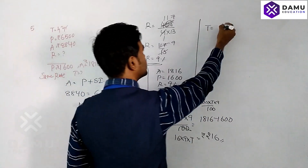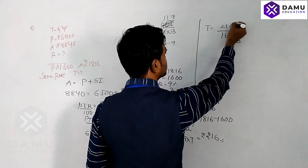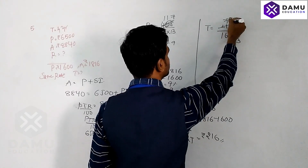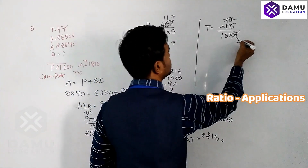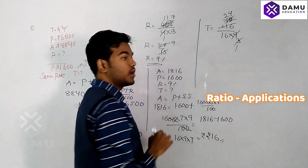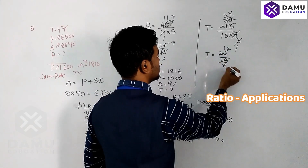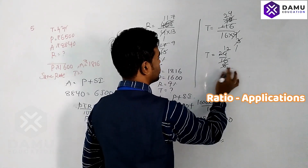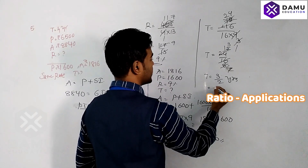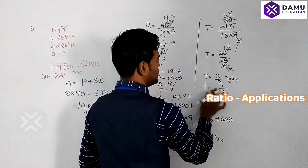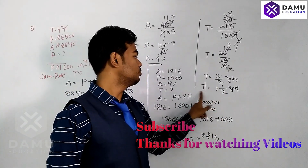Time equals two hundred sixteen divided by sixteen into nine. Three sevens are twenty-one, three threes are nine — seventy-two threes are two hundred sixteen. We get time equals twenty-four divided by sixteen. Two eights are sixteen, giving time equal to three by two years, which we can write as one and one half years.